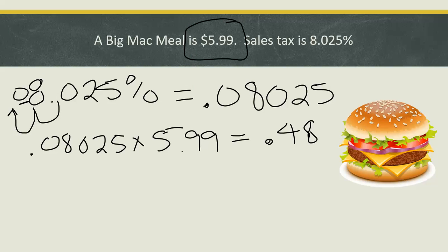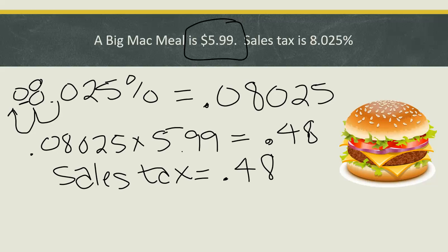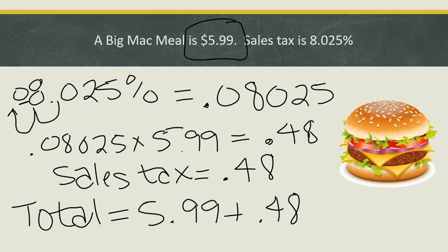$0.48 was my sales tax. If the problem only asks you for sales tax, you're done. However, if the problem asks you to find the total cost, you have to add the original price plus the sales tax. In this case, that means I would add $5.99 plus $0.48. My total for this meal would then be $5.47.